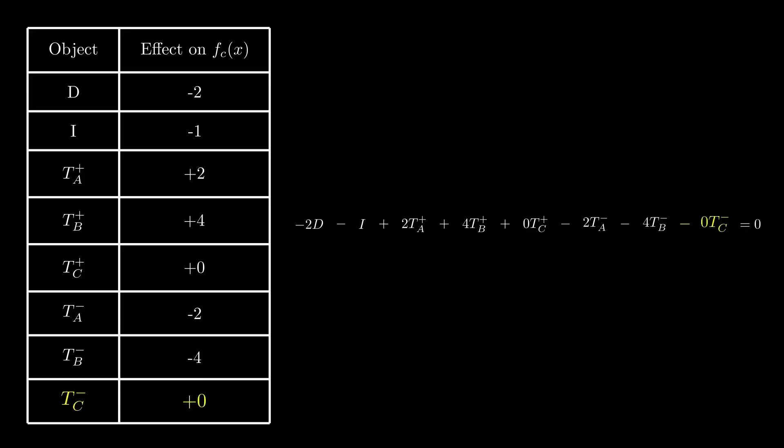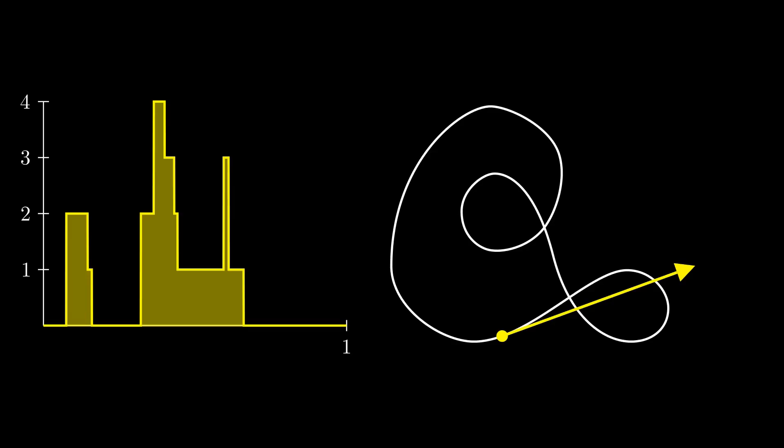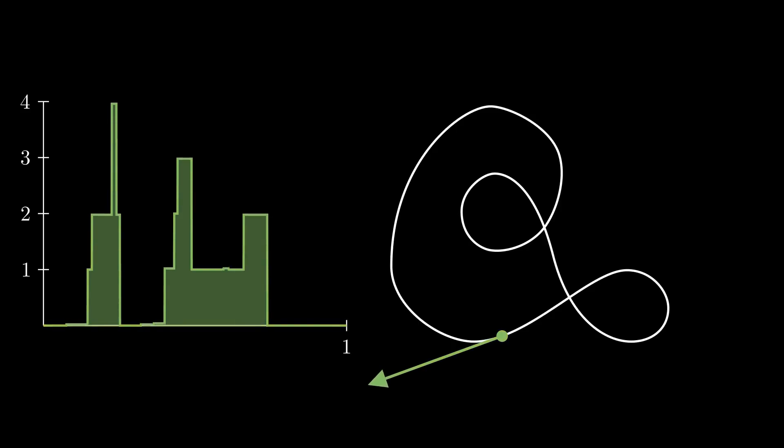Earlier I said we can pick a direction of the ray to define the crossing function, and we just need to be consistent, remember? Now what we'll do is pick the opposite direction and get an entirely new equation. It's similar, after all it's related to the same curve, but it is different. What this is going to do is let us play the same game where we tabulate the ways fc jumps, and it turns out we get slightly different numbers.